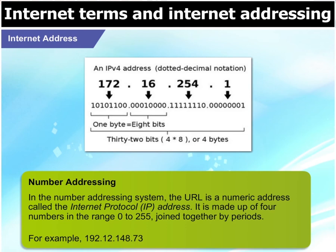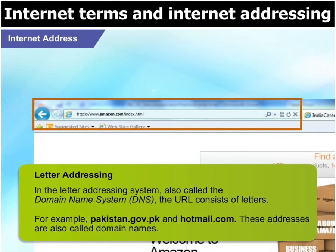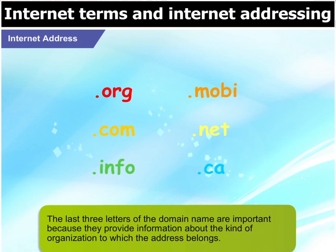The IP address is made up of four numbers in the range 0 to 255, joined together by periods. For example, 192.12.148.73. In the letter addressing system, also called the domain name system or DNS, the URL consists of letters. For example, pakistan.gov.pk and hotmail.com. These addresses are also called domain names. The last three letters of the domain name provide information about the kind of organization to which the address belongs.